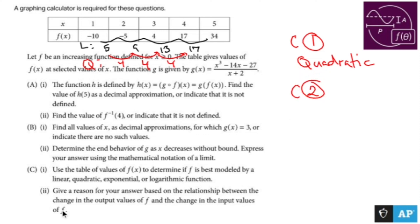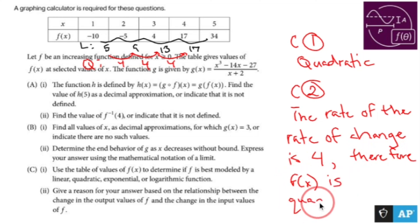That's all we had to do. C2 is the explanation. Give a reason for your answer based on the relationship between the change of the output values of f and the change of the input values of f. What I saw is the rate of the rate of change is four, therefore f(x) is quadratic. I think that description is good enough. Give a reason for your answer based on the relationship between the change of the output values. So the change of the output values and the input values, the rate of the rate of change is four. Therefore, f(x) is quadratic.